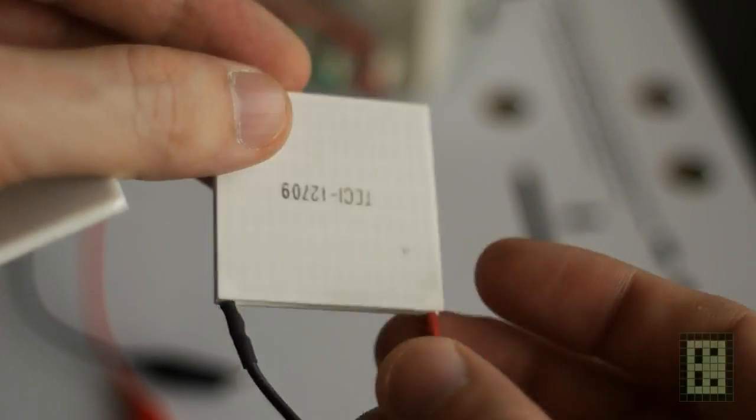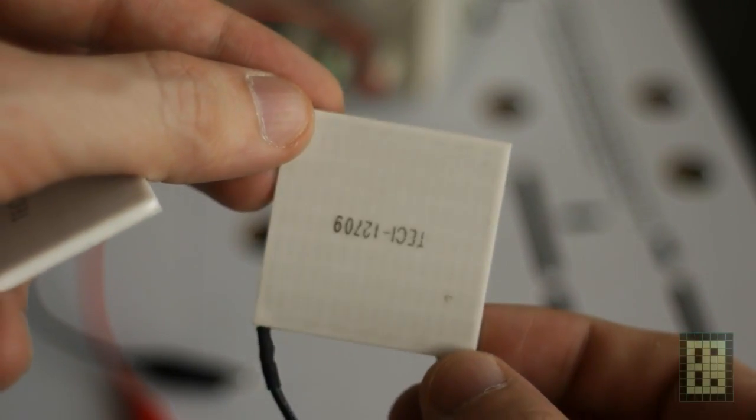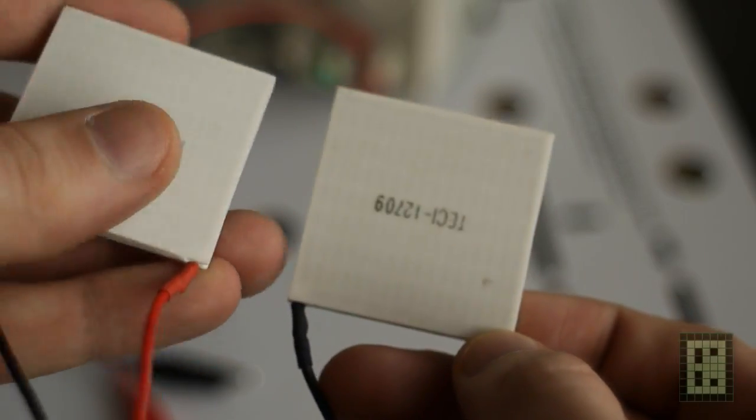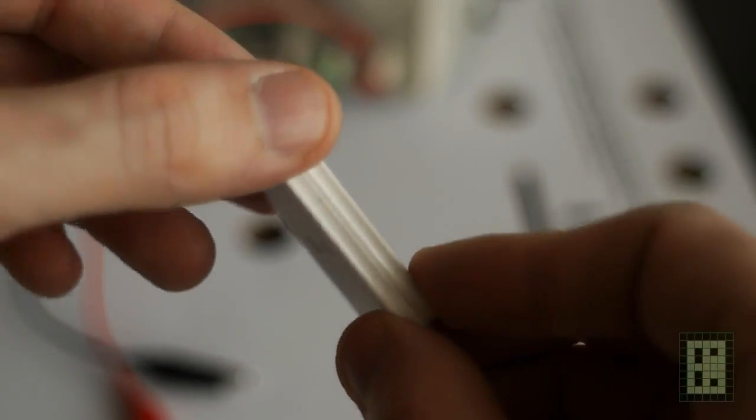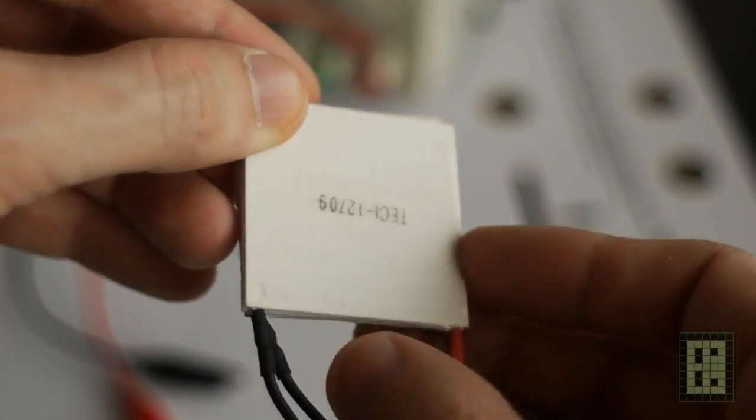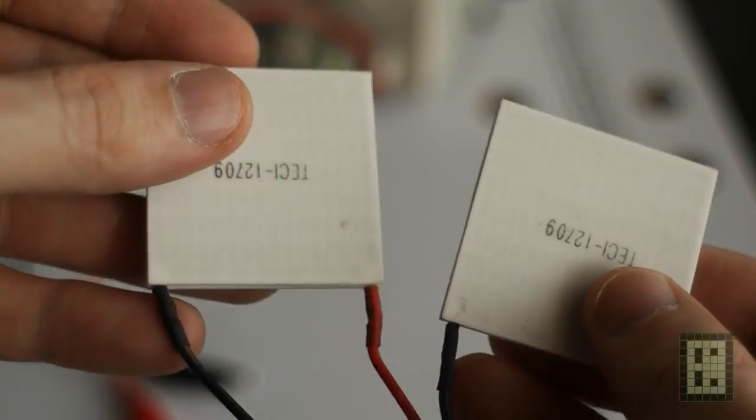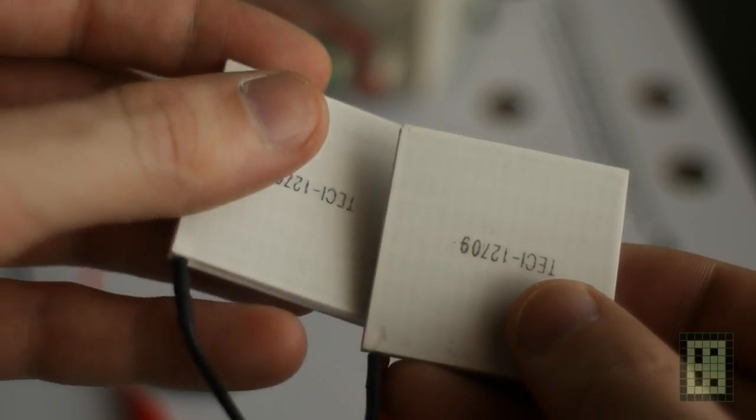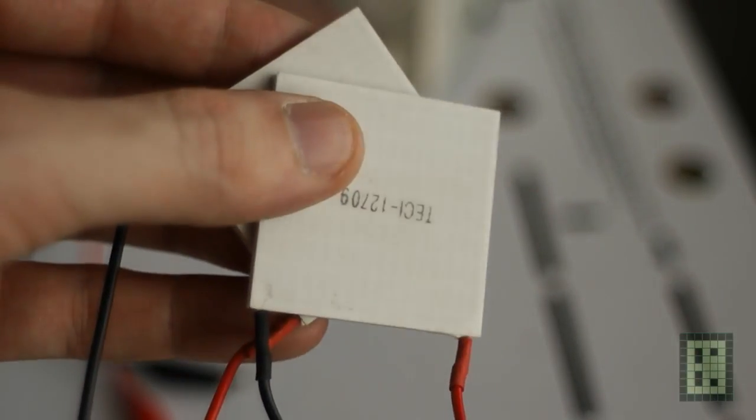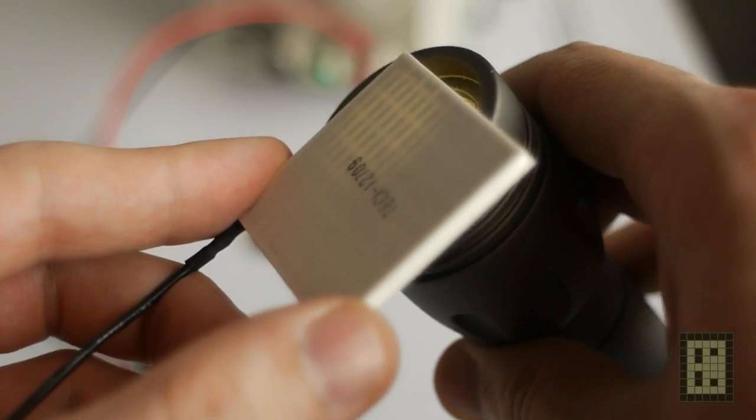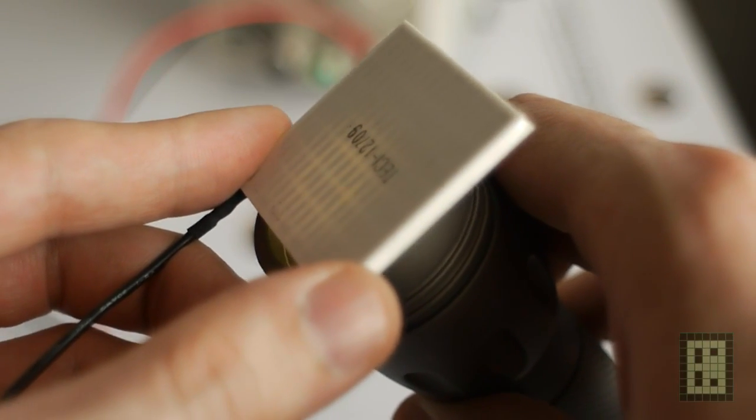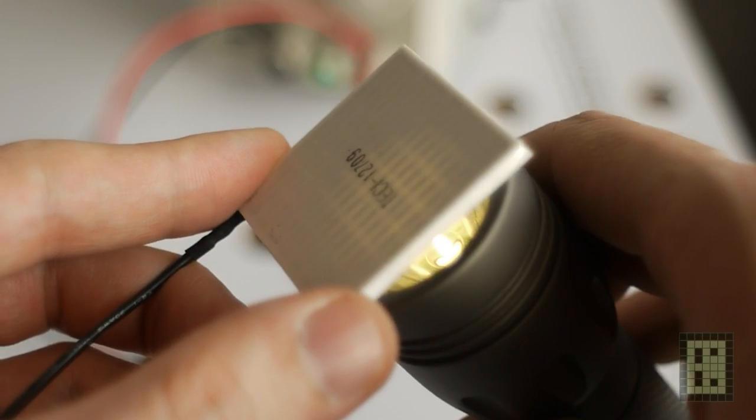What you see here in my hand is a TEC1-127-09, and you can find this very cheap on eBay. The numbers in the name - the first three numbers are representing the number of thermoelectric elements inside the module, like you see here.